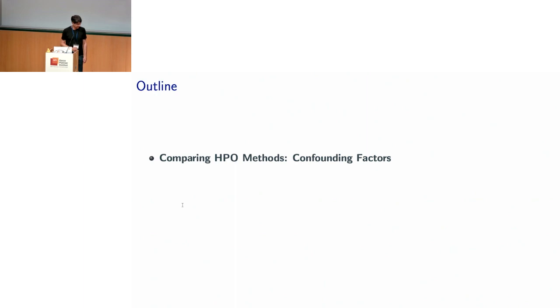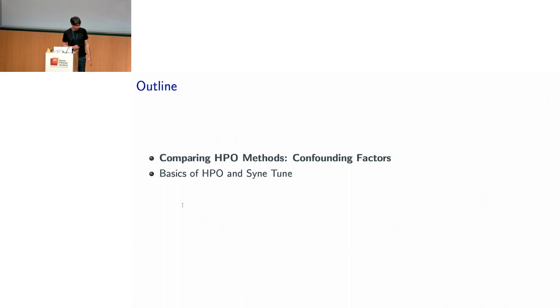Here's an outline of the tutorial. I'm first going to talk about some difficulties we face when comparing HPO — hyperparameter optimization methodology — with each other, and particularly highlight some confounding factors that plague quite a few of these comparisons and that we should aim to control. Then I'll briefly cover some basic concepts of hyperparameter optimization and some methods, and along the way introduce how this is done in SyneTune, a library that we built and open-sourced, which can help alleviating some of these factors.